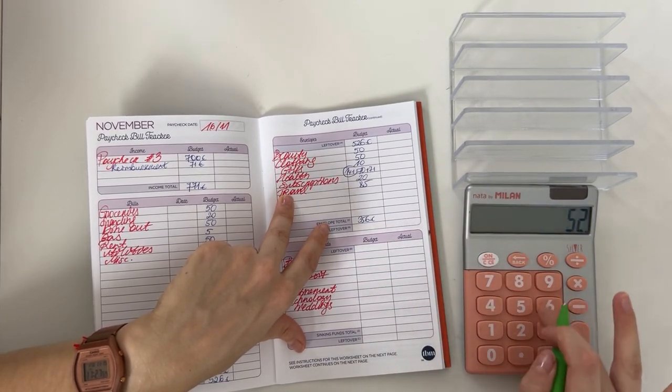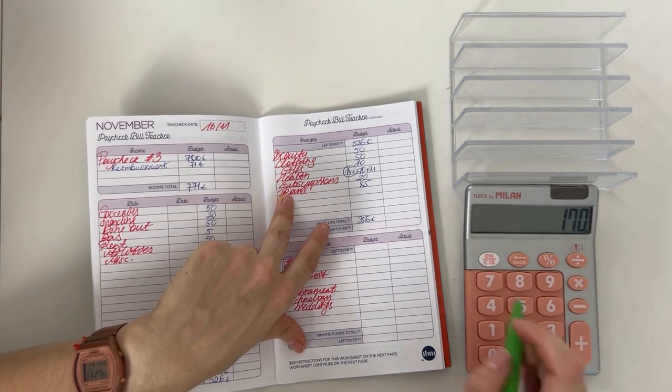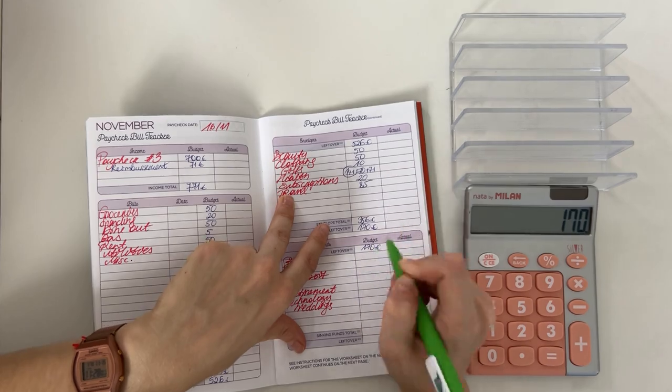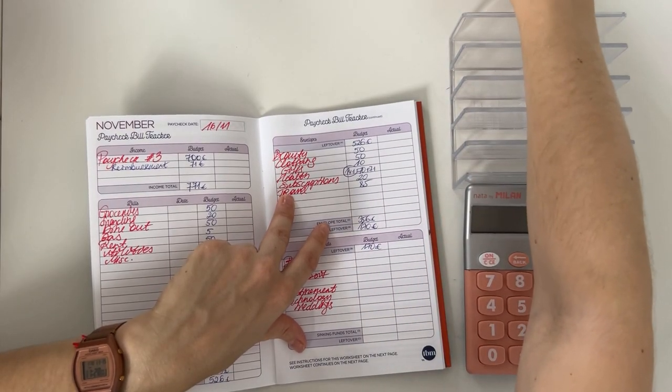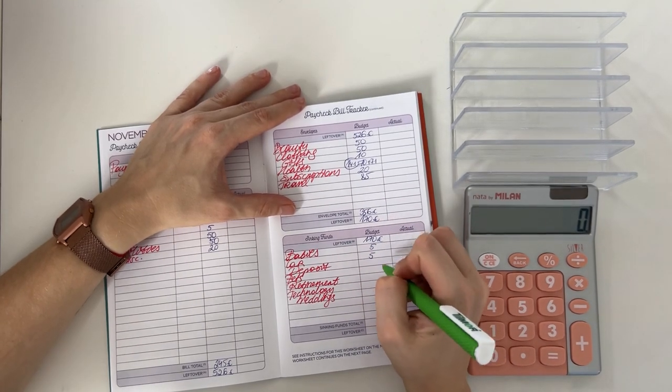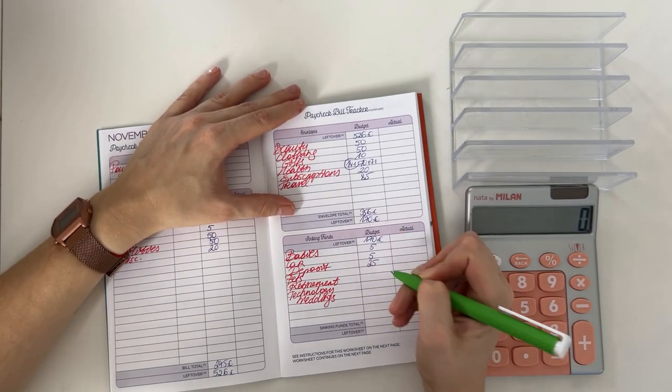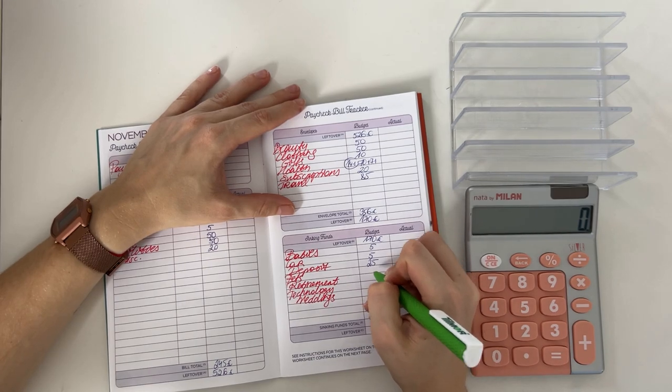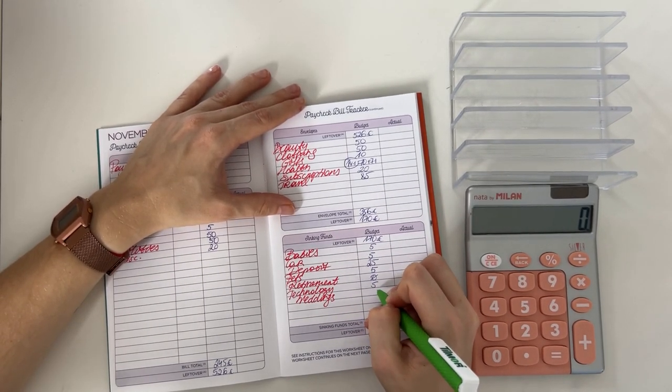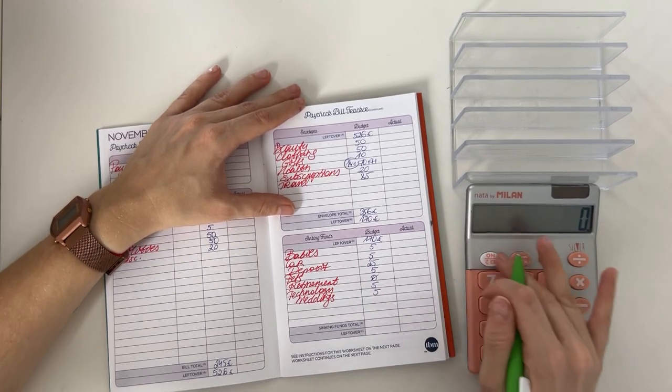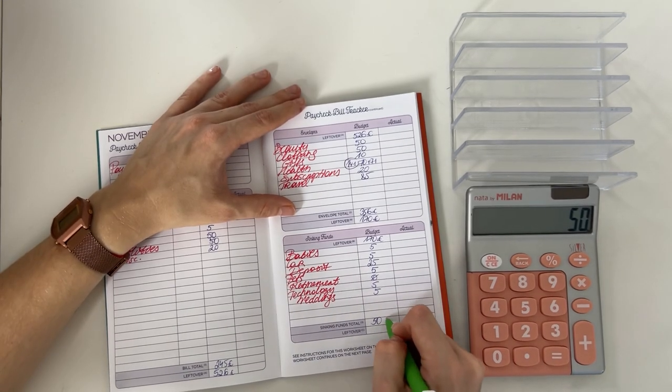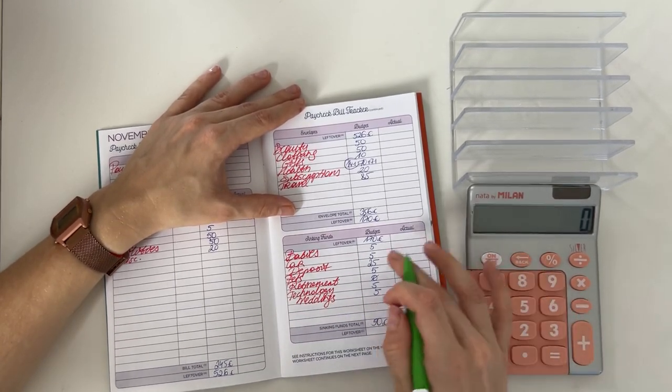526 minus 356 is 170 - we're bringing that down to long-term sinking funds. We have 5 going into babies, 5 going into car, 25 in deposit, we're going to add 5 in pets, 5 in technology, and 5 in weddings. So in total that is 50 euros in long-term sinking funds.